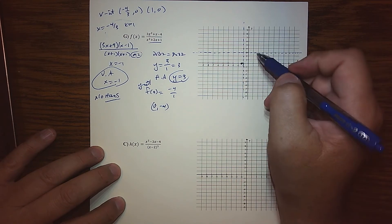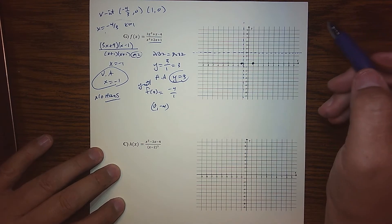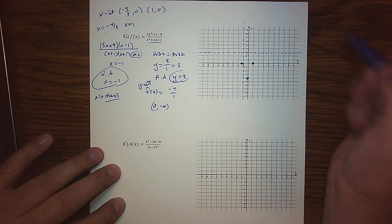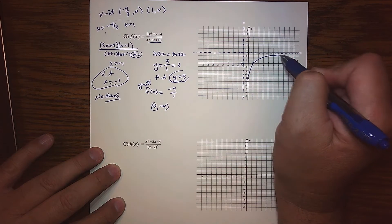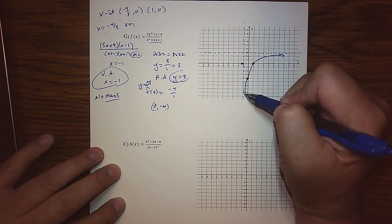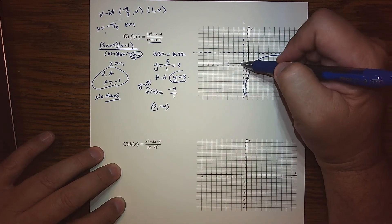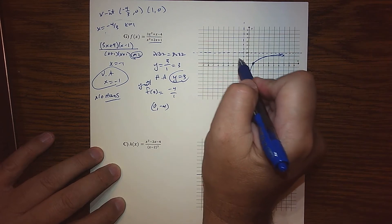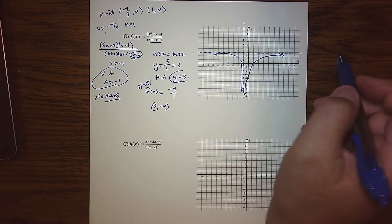We know we're crossing the x-axis at negative four-thirds, zero, so about right there. We know we're crossing the x-axis at 1, 0, right about there. And we know we're crossing the y-axis at 0, negative 4. So if I put everything on this side together, what I have is a graph that's doing that. Because my multiplicity is 2, I know this function is doing that, and then chances are this function is probably coming up and doing something of that nature.